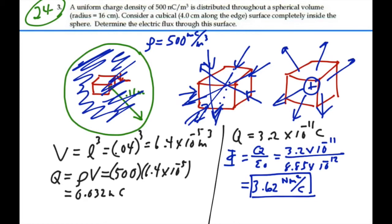So the radius of the sphere — which was 16 centimeters — was extraneous information. We didn't have to know that radius because it had no bearing on the net flux going through this little cube.